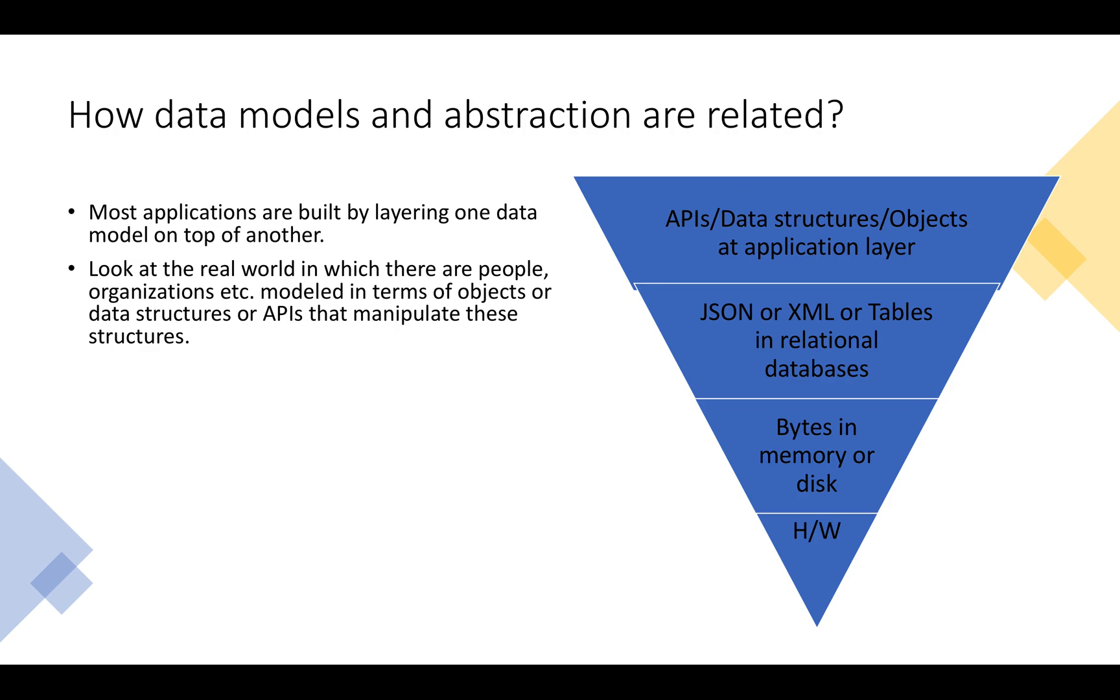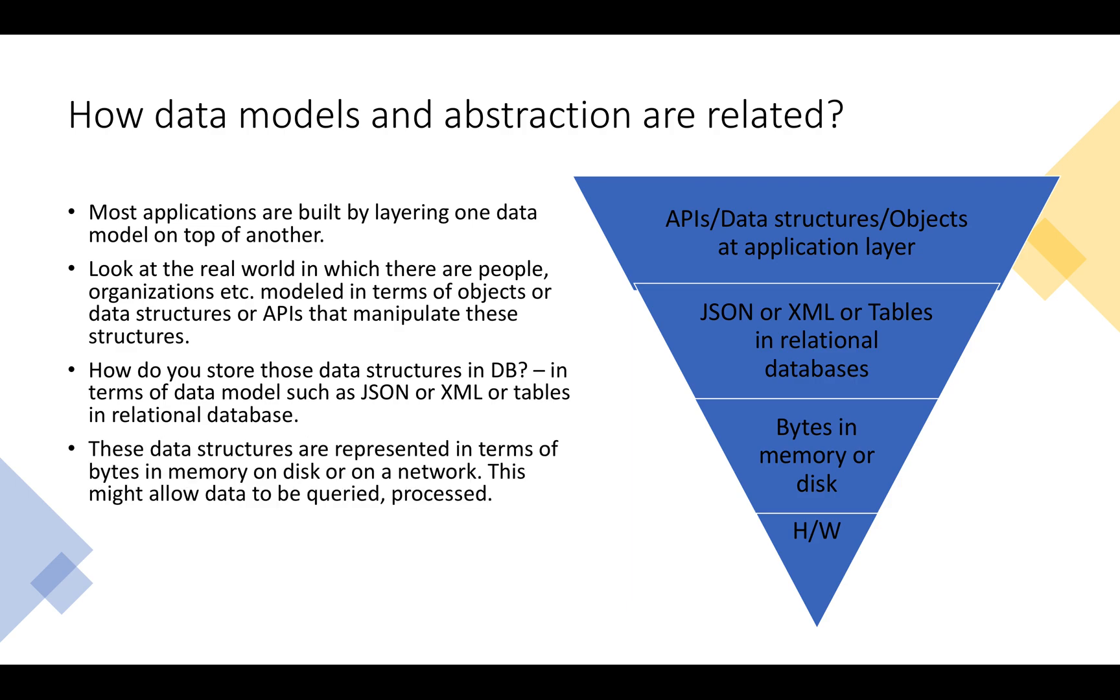These are modeled in terms of objects or data structures or APIs which help manipulate these data structures. These data structures in the database are stored in form of JSONs or XMLs or tables in relational databases. These data structures are represented in terms of bytes in memory or disk, and then these are represented in the hardware layer in forms of electric currents and magnetic fields.